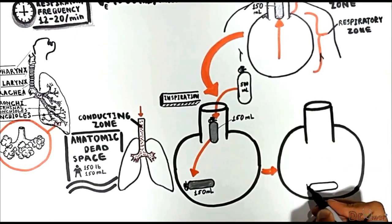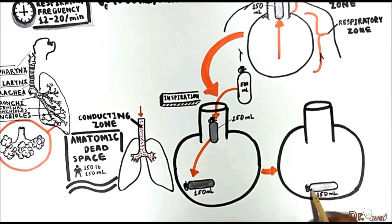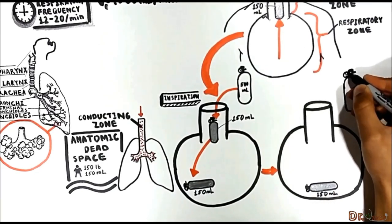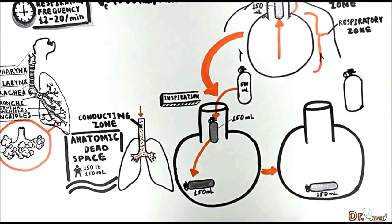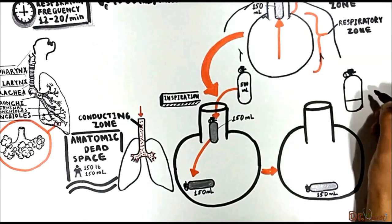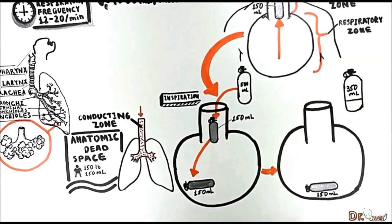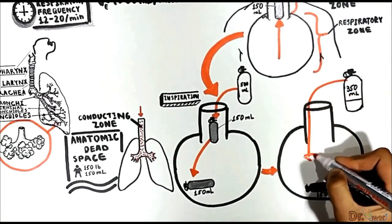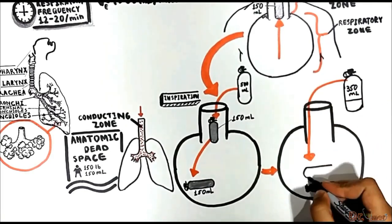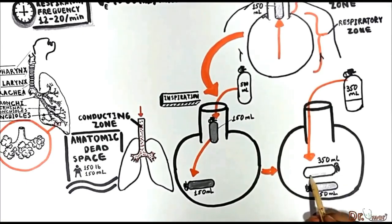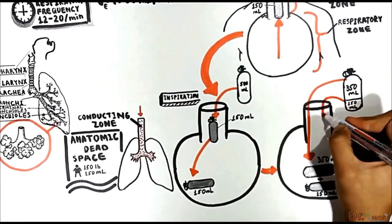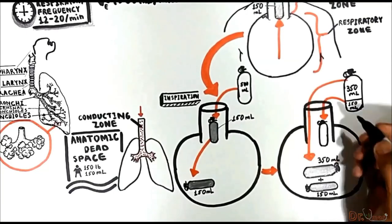Once that 150 mils reaches the alveoli, the next air comes from the tidal volume — but not all of it reaches the alveoli. The tidal volume is divided into two parts: 350 mils from the 500 mils of inspired tidal volume reaches the alveoli, added to the 150 mils that came from the anatomic dead space. The remaining 150 mils from the tidal volume stays and fills the anatomic dead space.